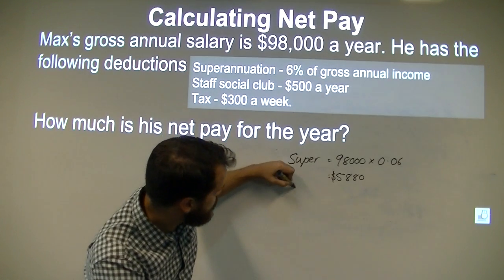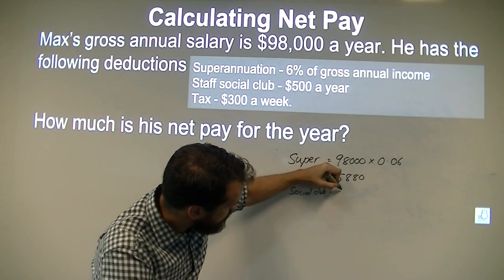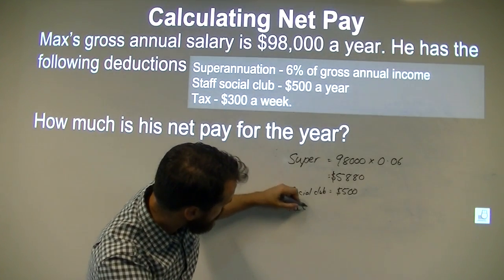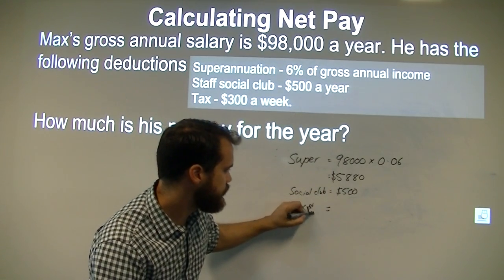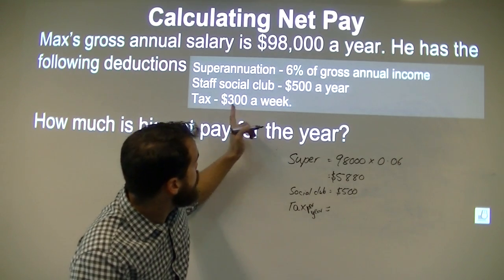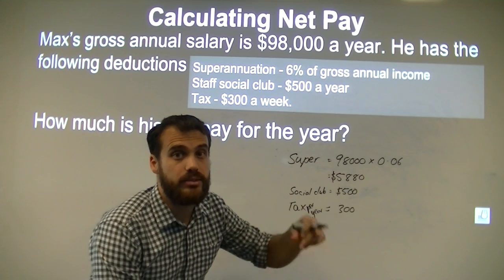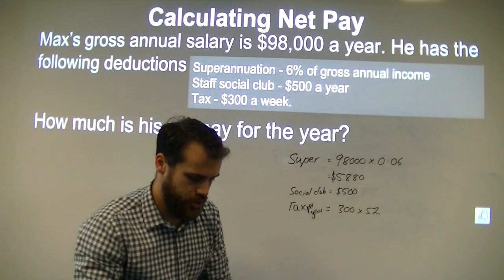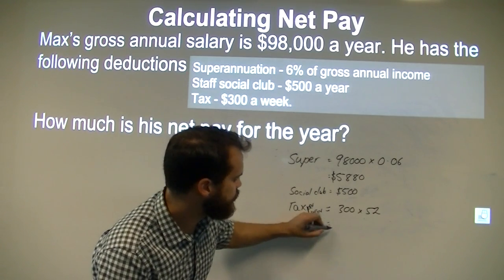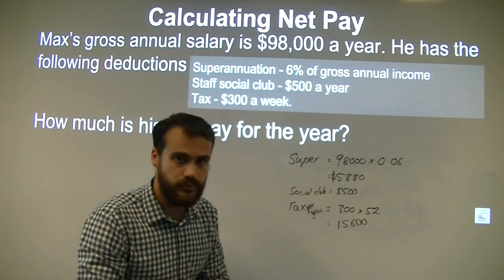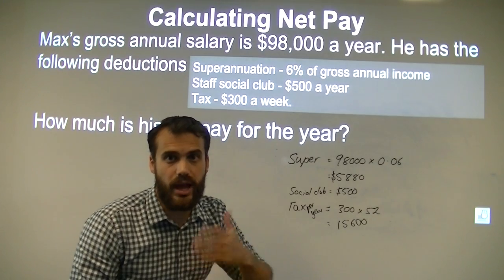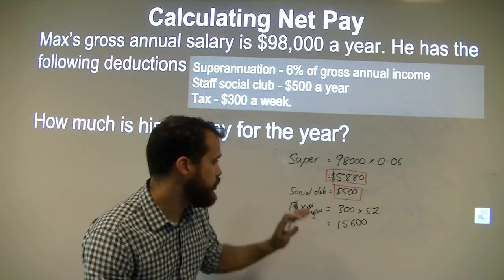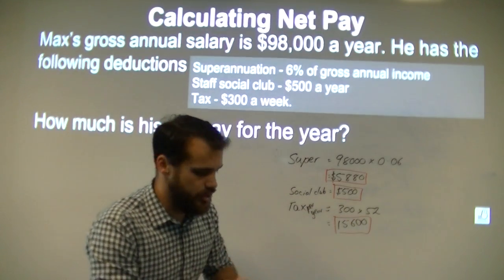The staff social club equals $500 a year, so we can just leave that as it is. Tax is slightly more complicated. The tax per year is equal to $300 per week times 52, because that's how many weeks are in a year. 300 times 52 is $15,600. So now we have three annual deductions: $5,880 per year for super, $500 per year for the social club, and $15,600 per year for tax.